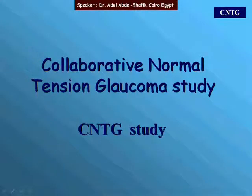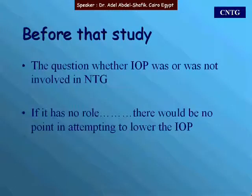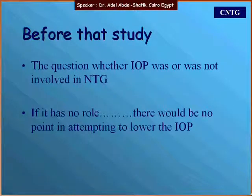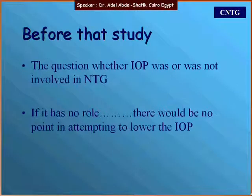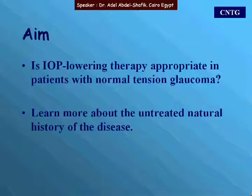The Collaborative Normal Tension Glaucoma Study addressed the question of whether IOP was or was not involved in normal tension glaucoma. If IOP had no role, then there would be no point in attempting to lower it by treatment. The goals of the study were to determine if IOP-lowering therapy is appropriate in these patients and to learn more about the untreated natural history of the disease.